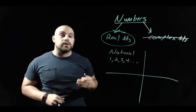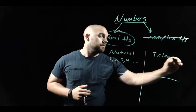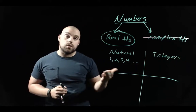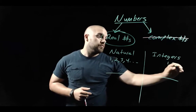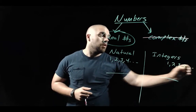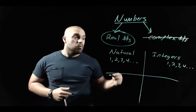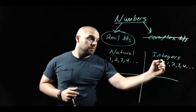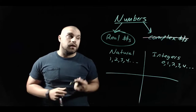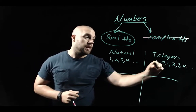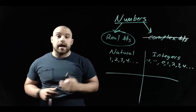The next set of numbers are the integers. Integers are related to the natural numbers because one, two, three, four, and all of those numbers are included, but we also include zero and all the negatives of the natural numbers — so negative one, negative two, and so on into the negative numbers.